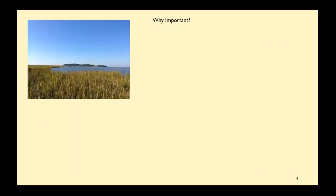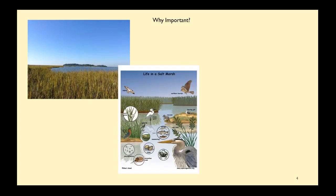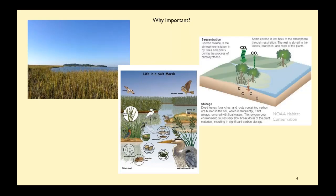Why is salt marsh important? We know it's a very efficient primary producer. It fixes a lot of carbon into its biomass and buries it in the soil. It's critical habitat for a lot of species, including those important to aquaculture and marine fisheries. And despite being such a small area compared to the global ocean, it contributes a disproportionately large amount of carbon to the global carbon budget. My research focuses on the carbon budget.